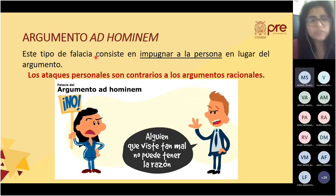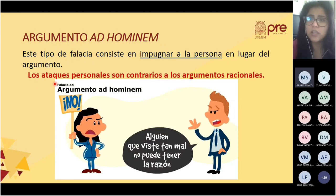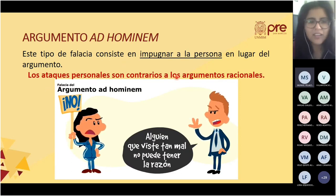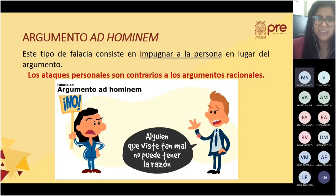El argumento ad hominem consiste en impugnar a la persona en lugar del argumento. Se ataca con argumentos por cómo viste, cómo es, cómo se ve, cómo habla, y no se ataca la postura que esa persona defiende. Los ataques personales son contrarios a los argumentos racionales. Por ejemplo: alguien que viste tan mal no puede tener la razón, en lugar de impugnar el argumento.